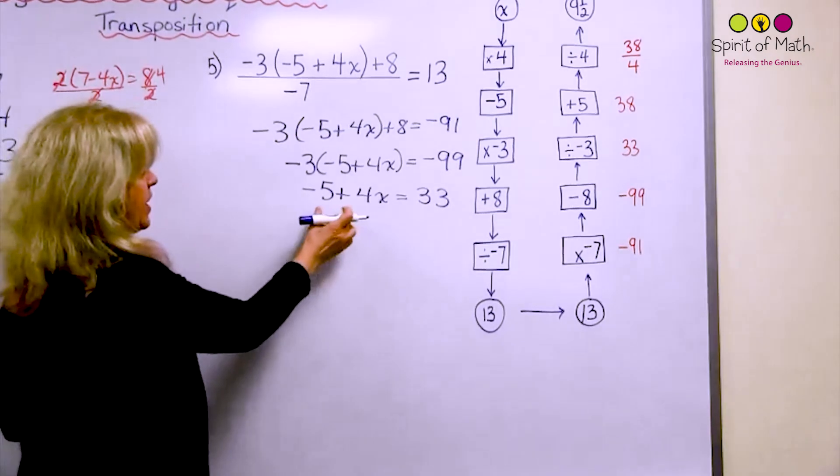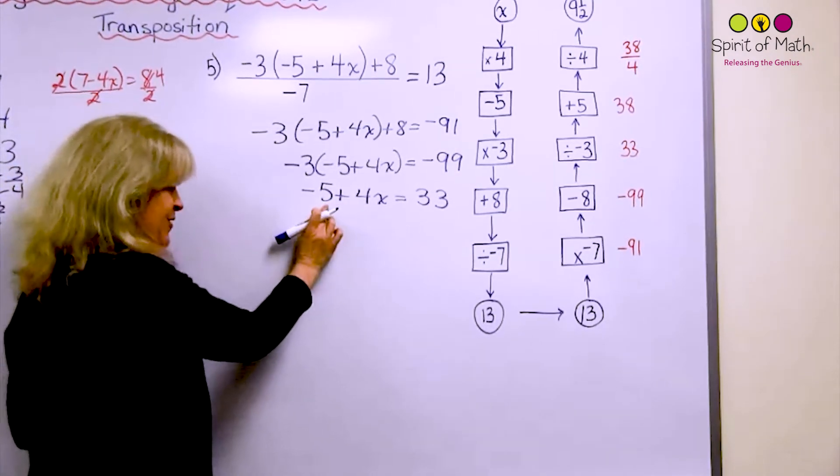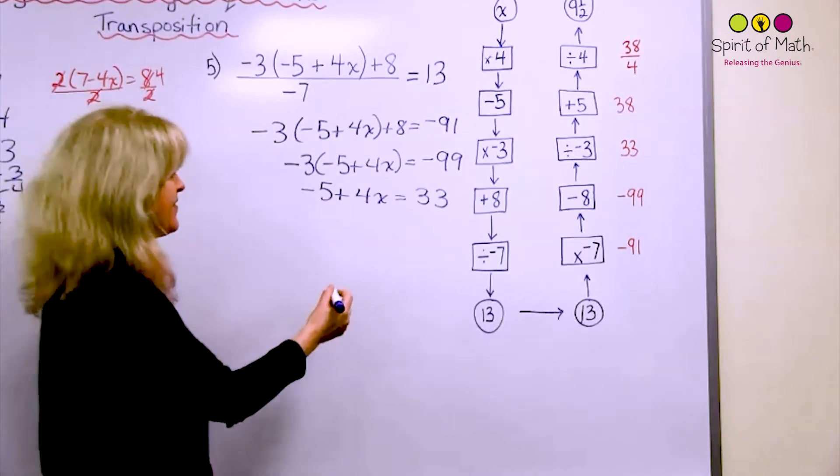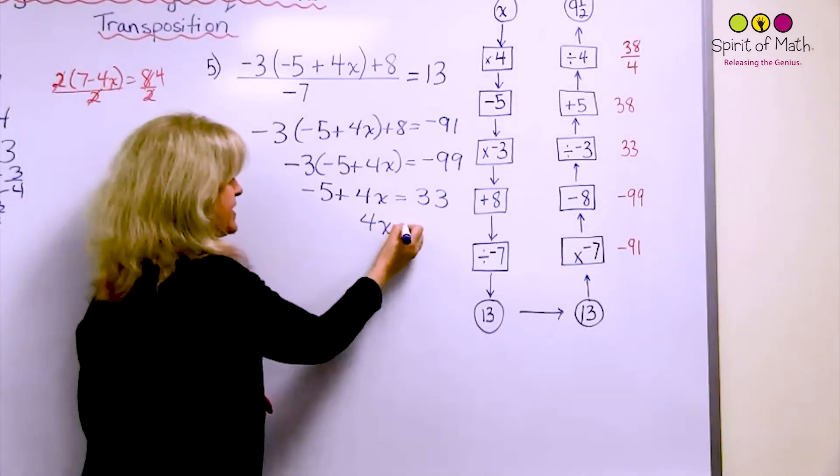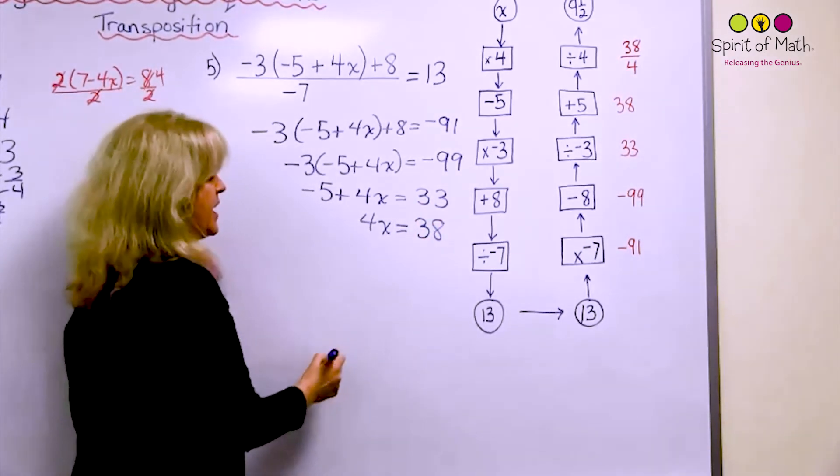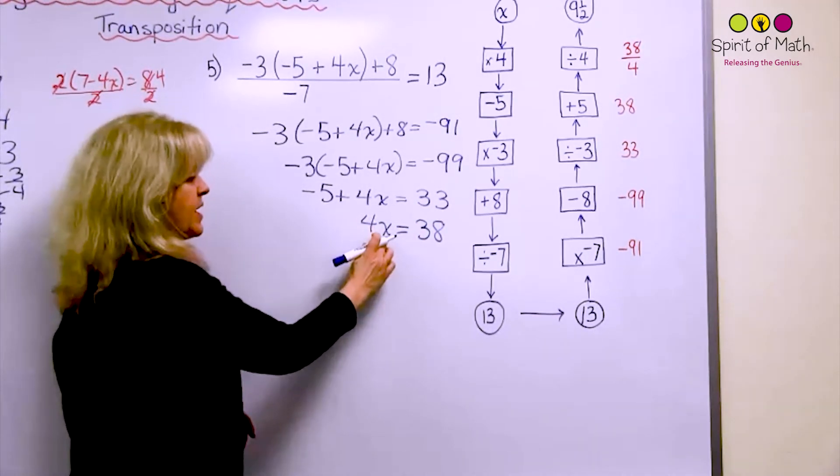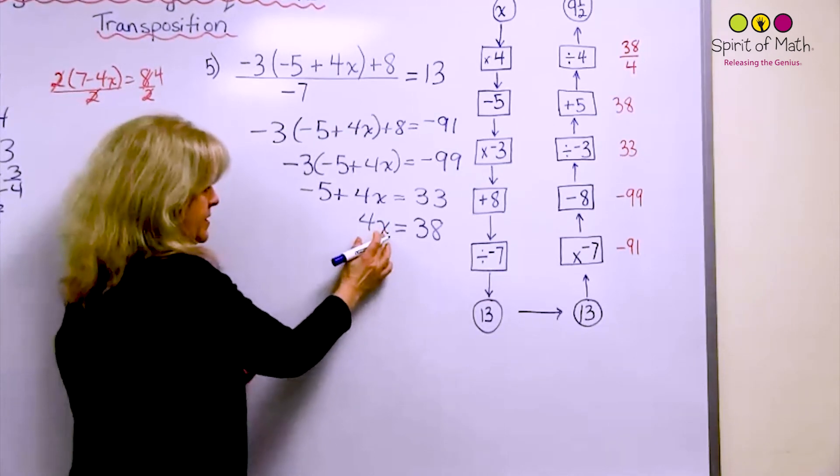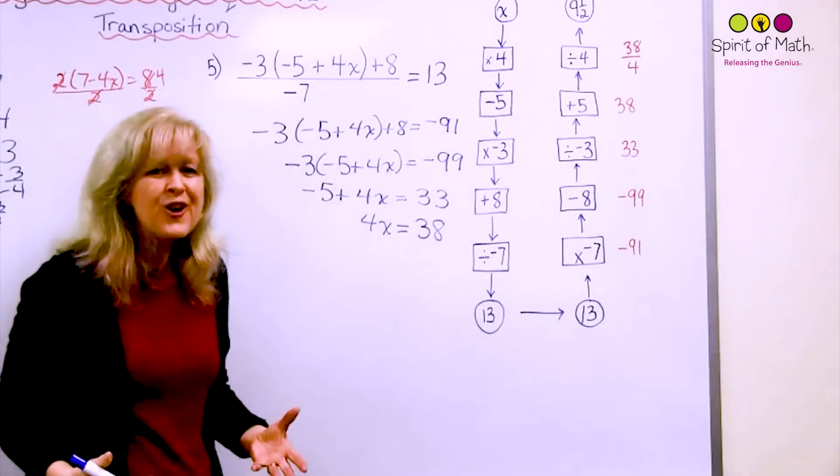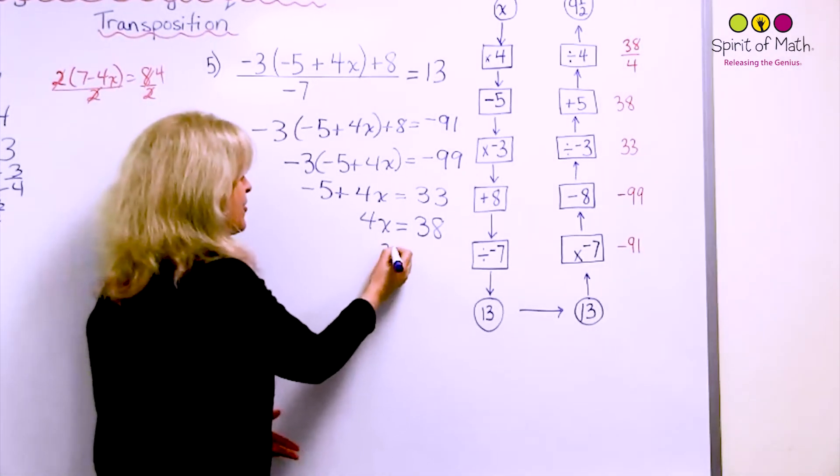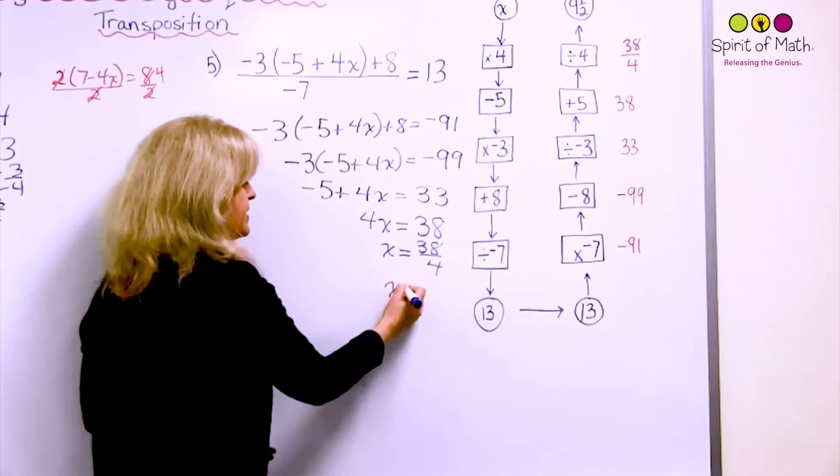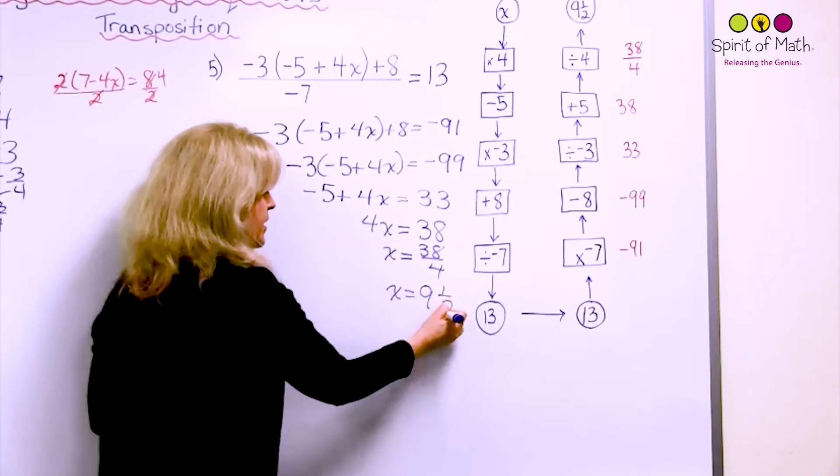And now you have the furthest away from the x now on this side is minus 5. So the opposite of minus is add 5. So 4x is equal to 33 plus 5 is 38. And now it's 4 times x. The opposite of times is, or x times 4 if you want to think of it that way. The opposite of times 4 is divided by 4. So x equals 38 divided by 4. And that is the same as 9 and 1 half.